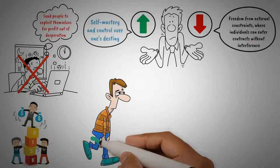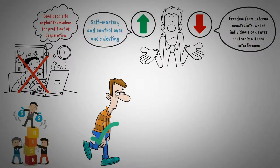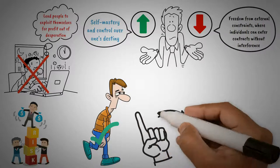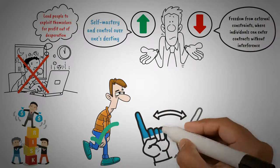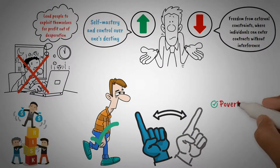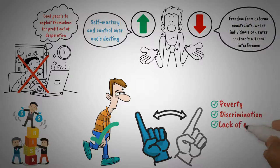He suggests that individuals facing severe economic hardships cannot exercise positive liberty and achieve their full potential due to systemic disadvantages such as poverty, discrimination, or lack of education.